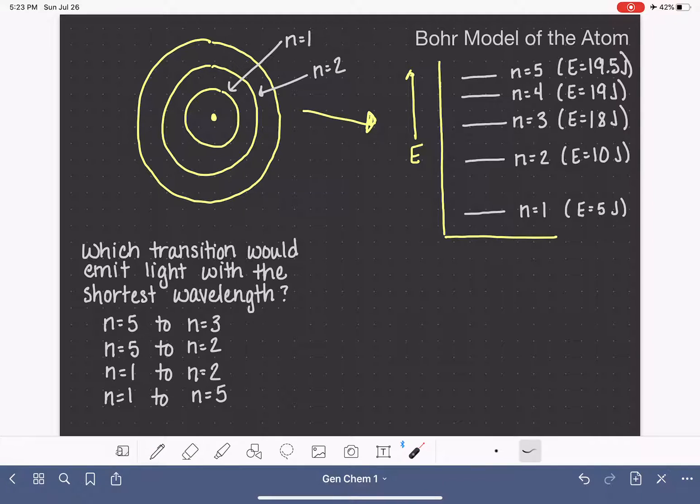So now we've assigned some numbers to these energy levels. The first thing that we're going to think about is different types of transitions and how they relate to the wavelength, the frequency, and also the energy of the photons being emitted or absorbed. So we have a question here, which of these following transitions would emit light with the shortest wavelength? Let's use this diagram to help us answer this question.